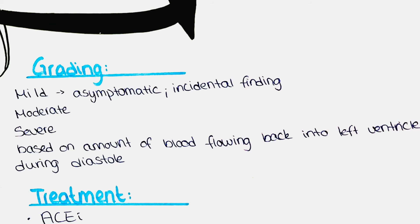Severe aortic regurgitation is the most severe form and can cause shortness of breath, fatigue, palpitations, heart failure, and death. The grading is based on the amount of blood that regurgitates back into the left ventricle during diastole. Hemodynamically significant aortic insufficiency is characterized by a high difference between systolic and diastolic blood pressure, typically over 80 mmHg.